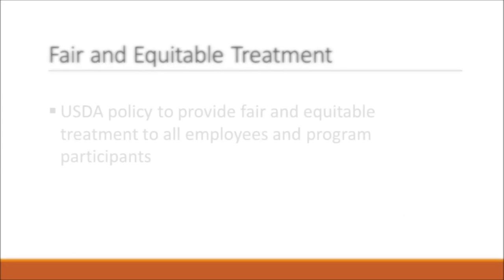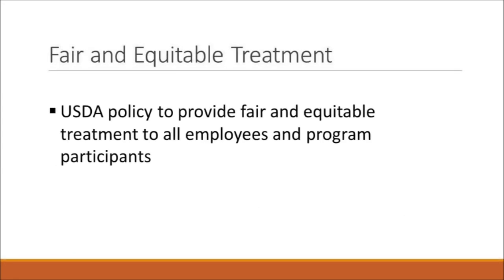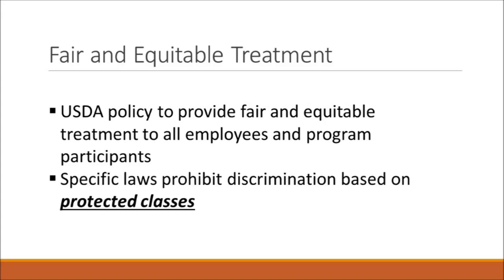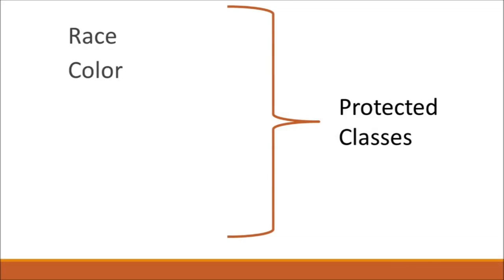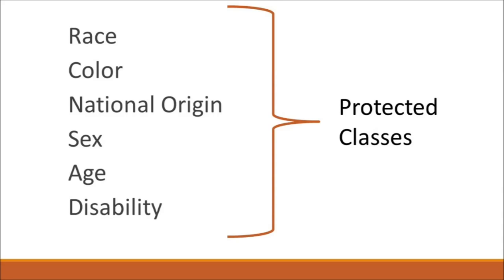Although it is the policy of USDA and FNS to provide fair and equitable treatment to all employees and program participants, specific civil rights laws prohibit discrimination in child nutrition programs based on race, color, national origin, sex, age, and disability. These are called protected classes. A protected class is a characteristic or factor, such as race, color, national origin, sex, age, or disability, which is protected from unlawful discrimination by federal statute, executive order, and USDA regulation or policy.